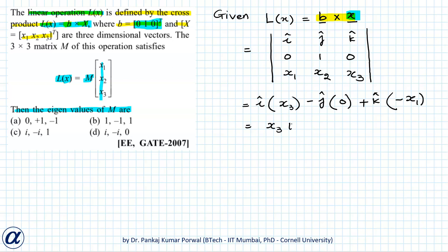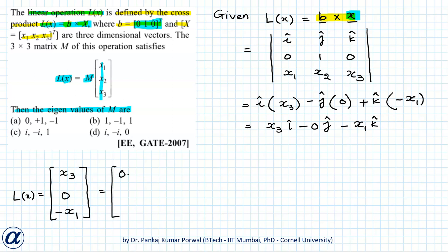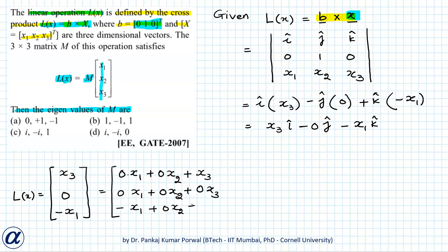This can be written as x3·i-cap minus 0·j-cap minus x1·k-cap. So Lx in column vector notation is (x3, 0, -x1). This can also be written by expanding each component in terms of x1, x2, x3, which helps us break down this column vector into a matrix multiplied by the vector (x1, x2, x3).